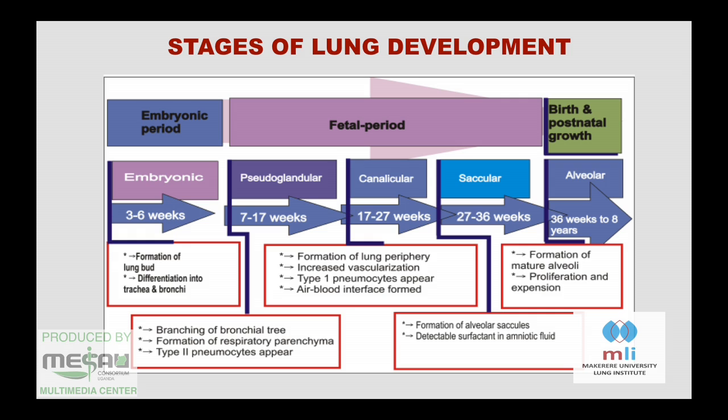I have a picture from the internet that shows the different phases of lung development until about eight years. From three to six weeks is what you call the embryonic stage. That's when the lung is starting to form, those lung buds starting to form, and differentiation into the trachea and bronchi. If something goes wrong there, you can have absent lung development, no branching, and all those things.